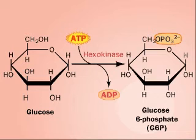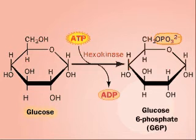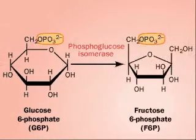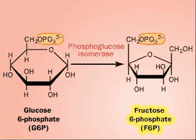Hexokinase catalyzes a reaction which phosphorylates glucose to make G6P, glucose 6-phosphate. Phosphoglucose isomerase rearranges the molecule to make F6P, fructose 6-phosphate.